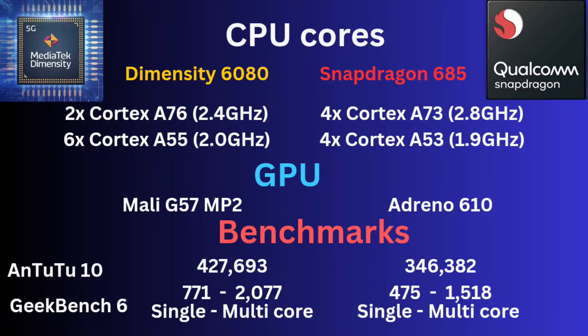Looking at the efficiency cores, the A55s on the Dimensity 6080 are also better than the A53s on the Snapdragon 685. So the Dimensity 6080 has Cortex-A76 and Cortex-A55 CPU cores, which perform better than the A73 and A53 on the Snapdragon 685. The Dimensity 6080 clearly has better CPU performance.